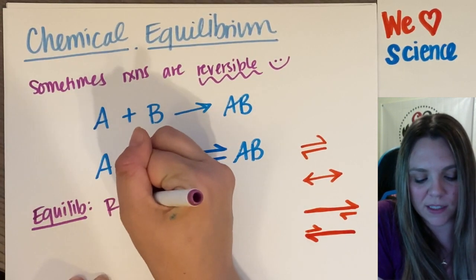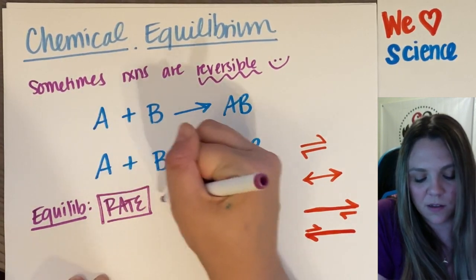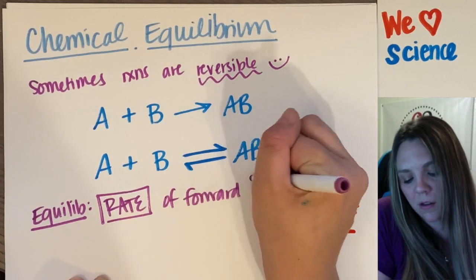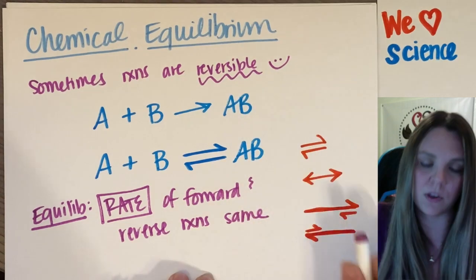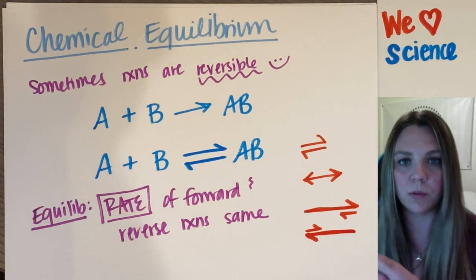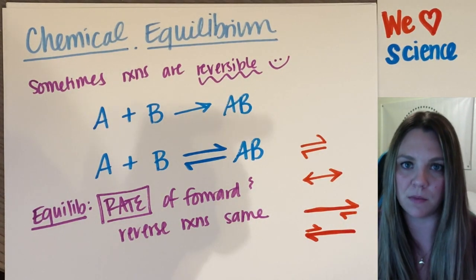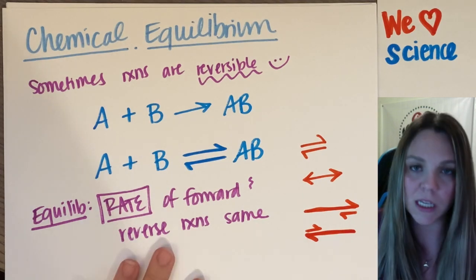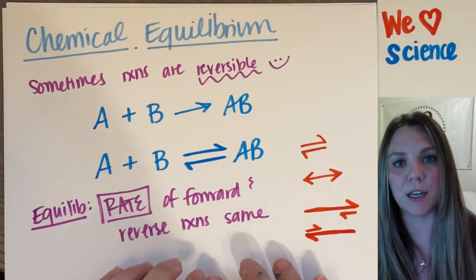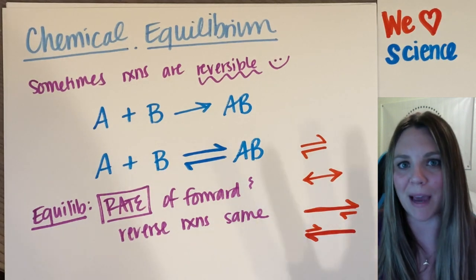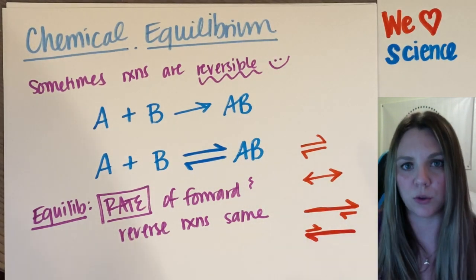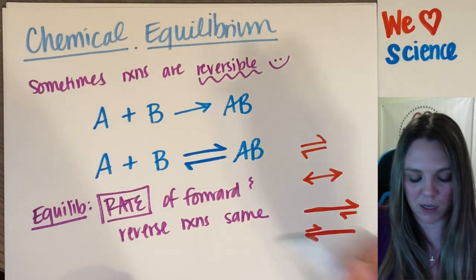Equilibrium is when the rate of the forward and reverse reaction - the rate of the forward reaction and the reverse reaction are the same. They're equal. This does not mean that it's when the reaction stops. It does not mean that it's when I have an equal amount, an equal concentration of reactants and products.